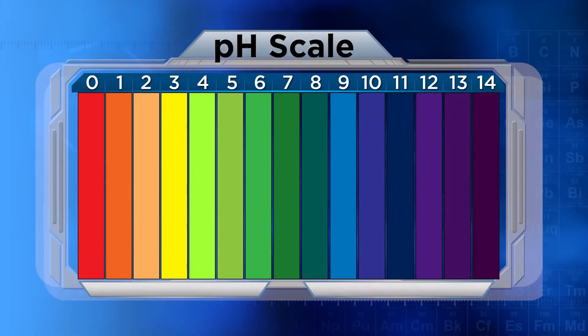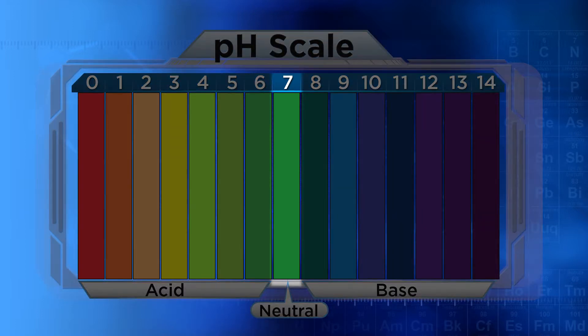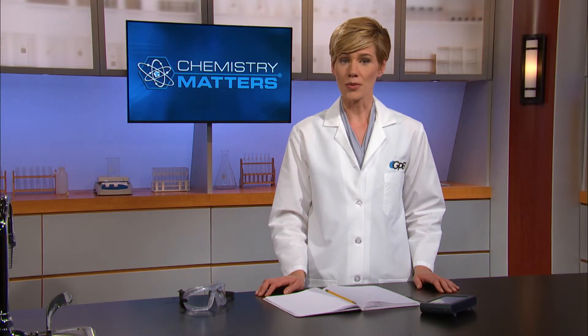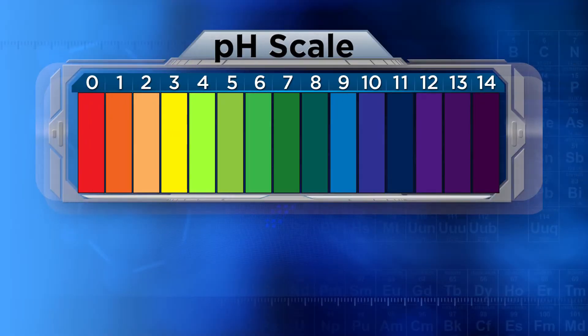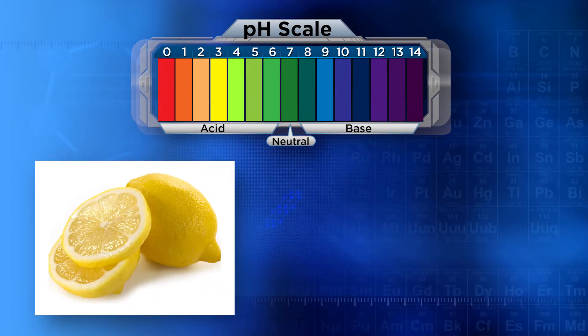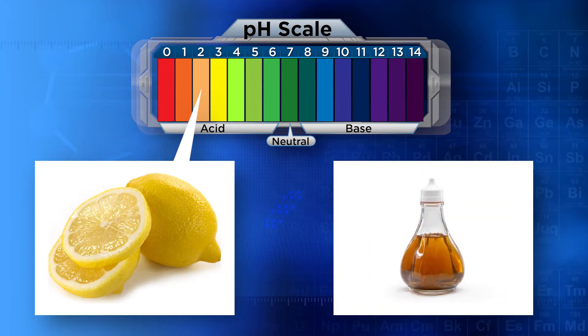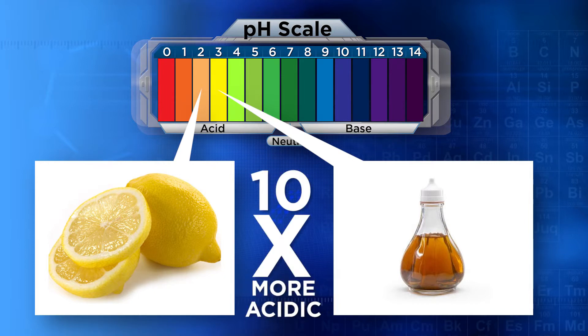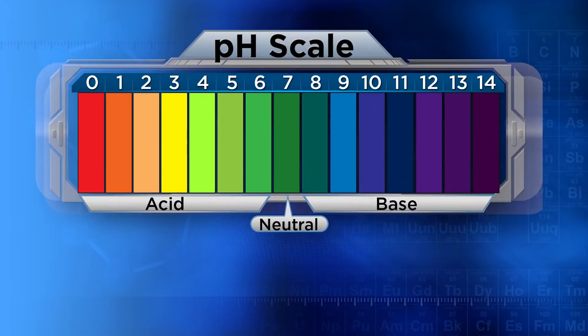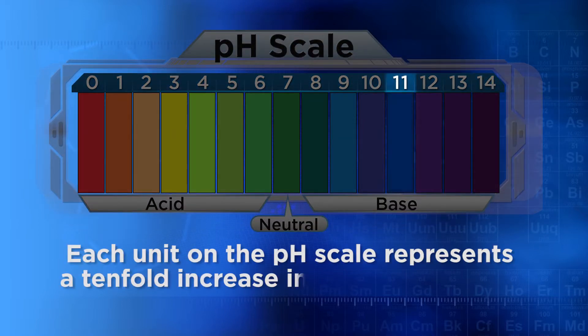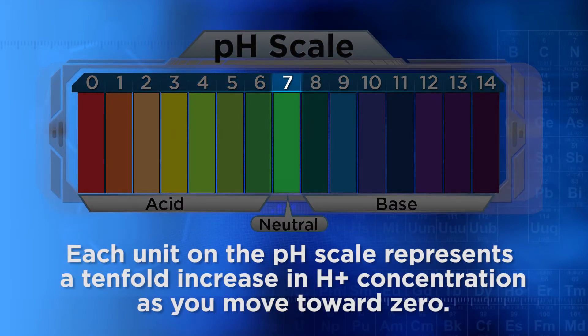On the pH scale, a neutral solution would have a value of 7. Although the pH scale is more user-friendly and easier to work with, remember it's a logarithmic scale. So when we compare two substances, such as lemon juice, which is a 2 on the pH scale, to vinegar, which is a 3, we find that lemon juice is actually 10 times more acidic than vinegar. That's because each unit on the pH scale represents a tenfold increase in H⁺ concentration as you move towards zero.